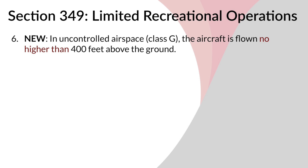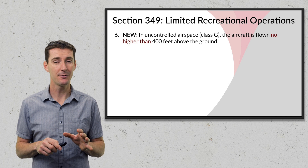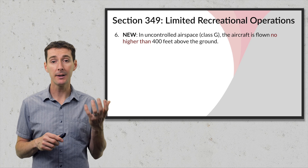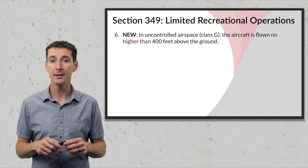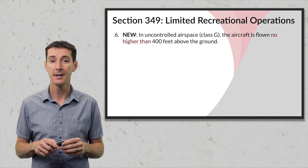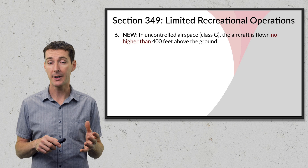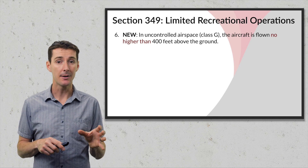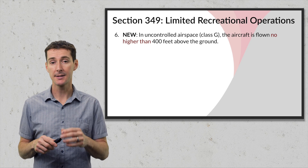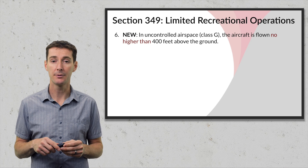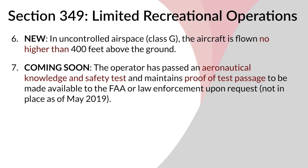Limitation number six: in Class G airspace, the aircraft must be flown no higher than 400 feet above the ground. Previously, the FAA had only recommended 400 feet in an advisory circular without making it a ruling. Now it is codified — you cannot fly above 400 feet above the ground.